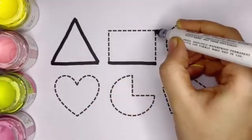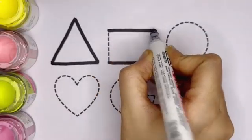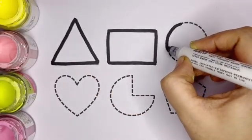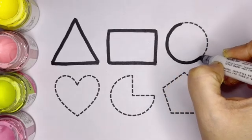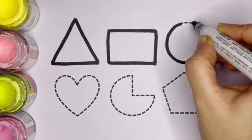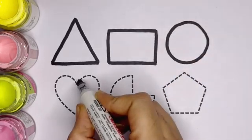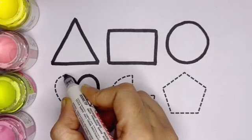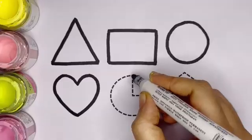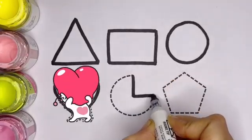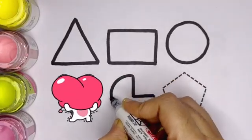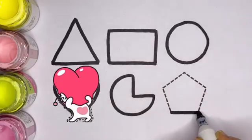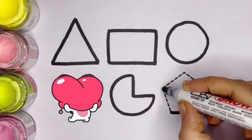Rectangle. This is a rectangle. Circle. This shape is called circle. Next is heart. This is heart. Pie. This shape is pie. Pentagon. This is pentagon.